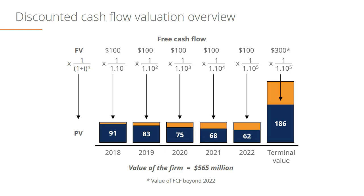But raised to the power of 5, that's only worth $186 today. As you can see, the discounted cash flow amount becomes quite large at the end but the present value is significantly less. To calculate the entire value of this firm — which is $565 million — we add up these cash flows in their present value: $565 million of present value compared to $800 million of future value.